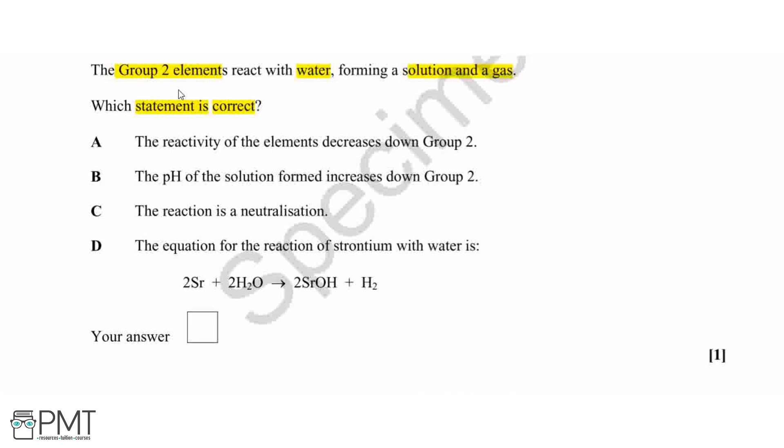So we're going to call our group 2 element X to show that it's a general element, and we're reacting this with water. When we have the reaction of one of our group 2 elements with water, we're going to produce a hydroxide solution.